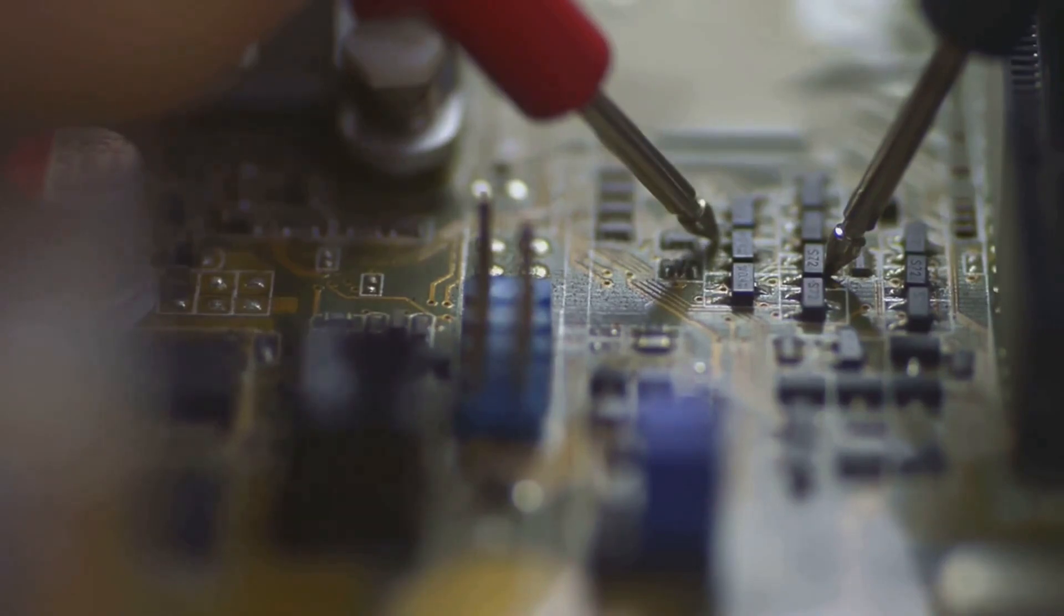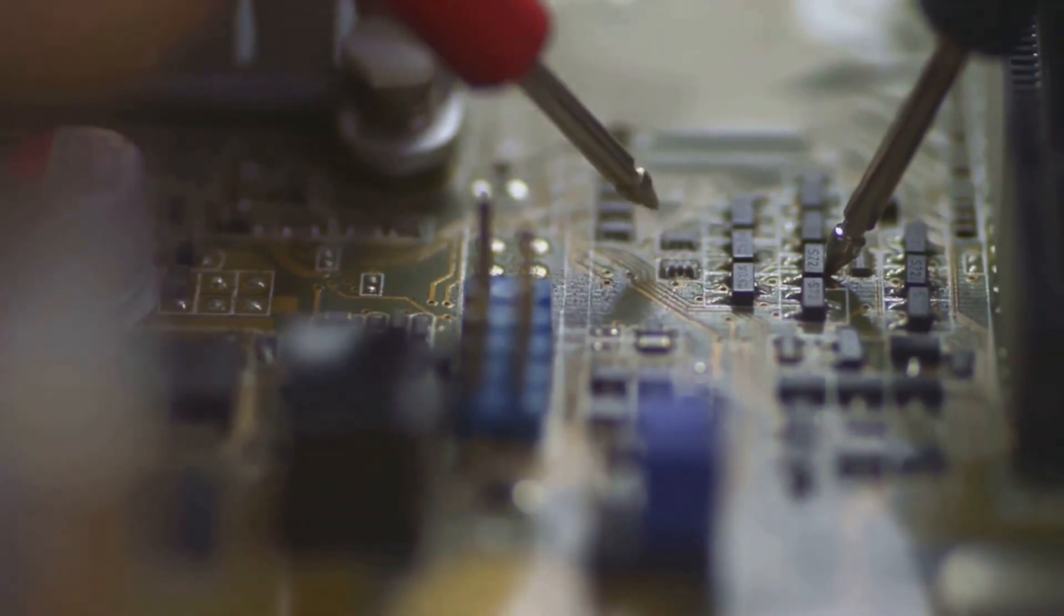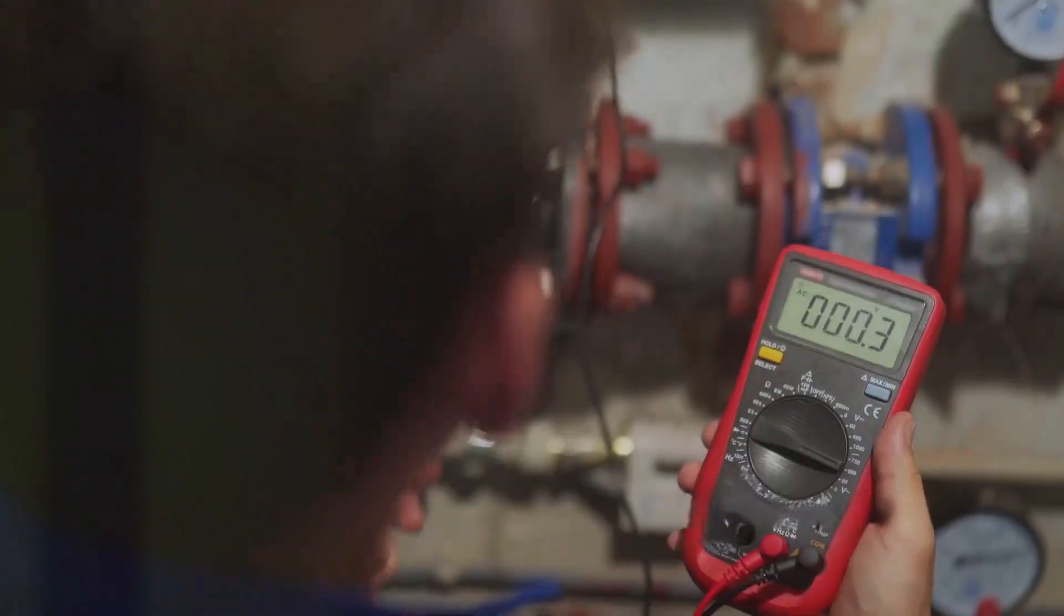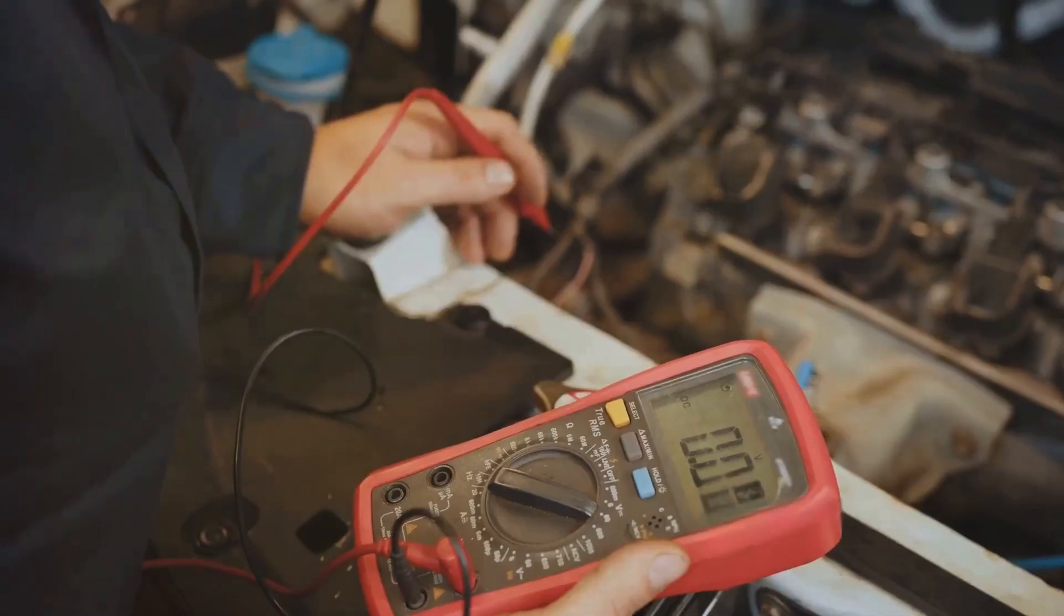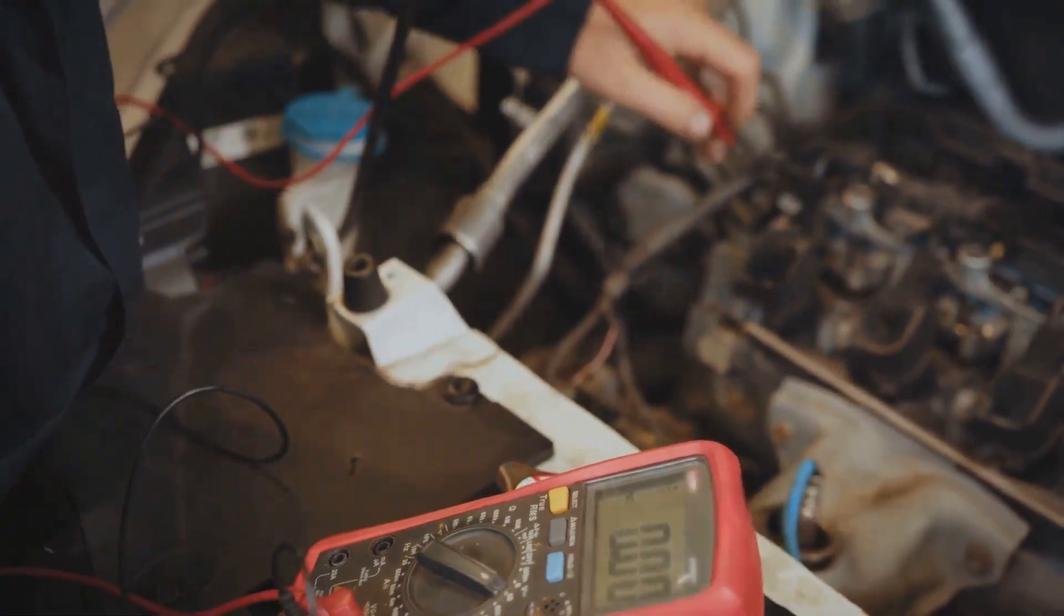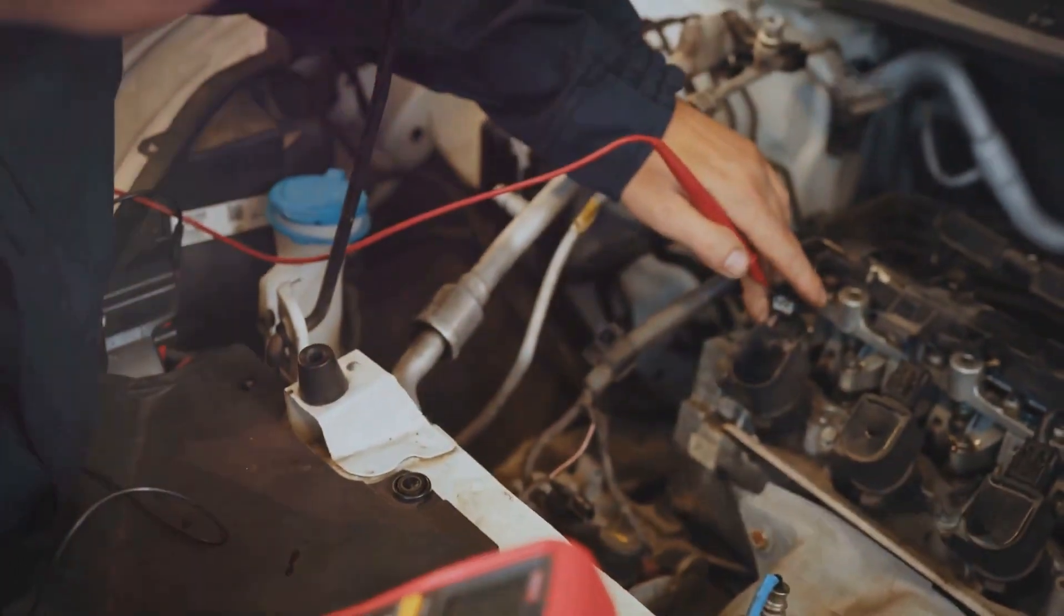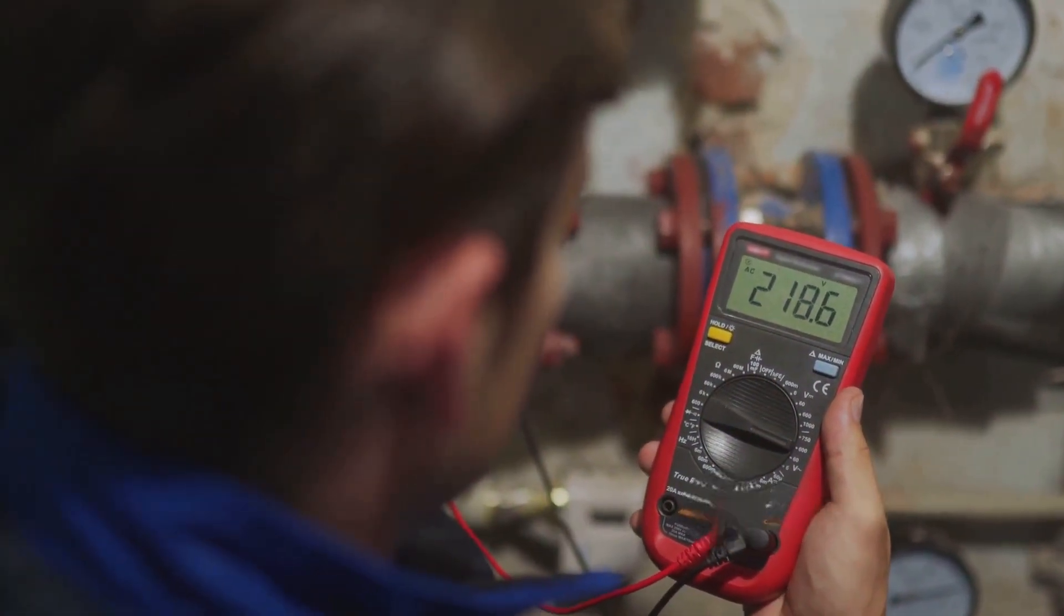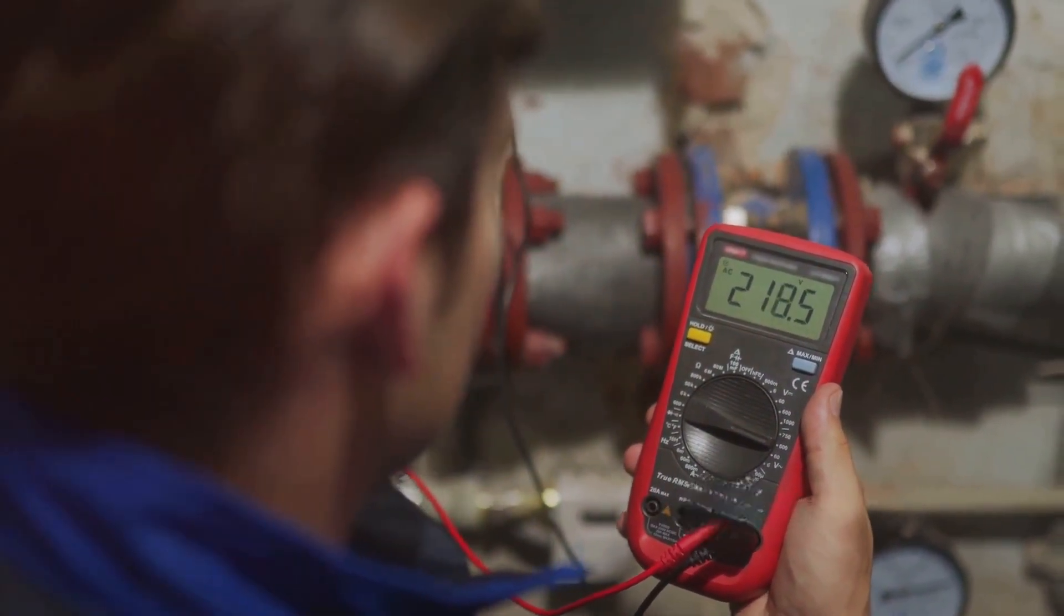There you have it. With these steps you should be able to get your multimeter reading voltage again. Remember safety first. Always take precautions to protect yourself and your equipment. If in doubt, consult a professional. They can provide expert assistance and ensure your multimeter is repaired correctly.